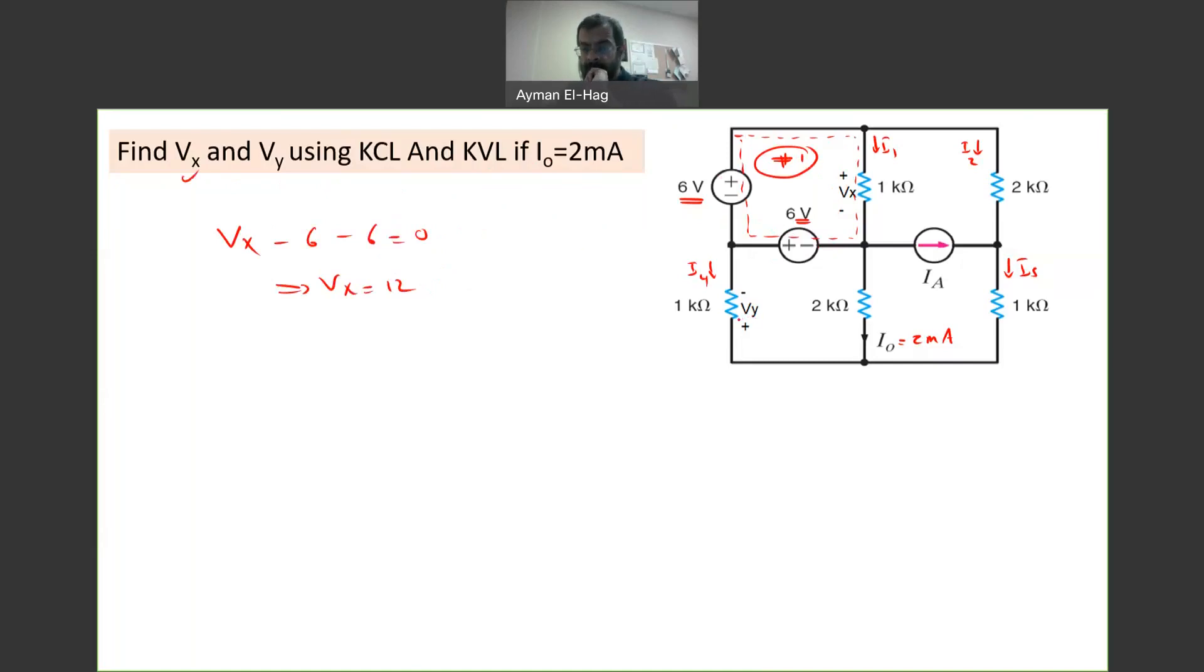How about VY? Now, this is VY. So is VY in a loop that we know the voltages? No, it's not. But wait a second. We know I0. I0 is 2 milliamp.